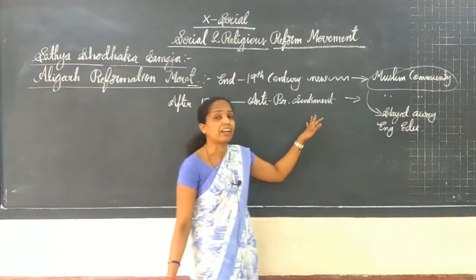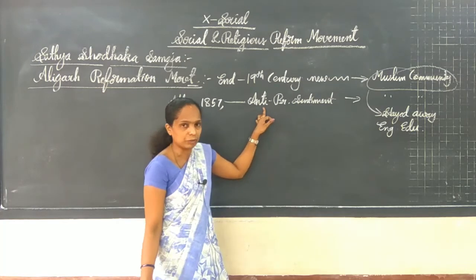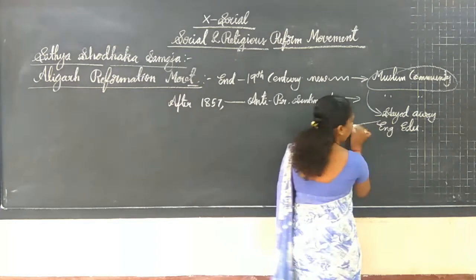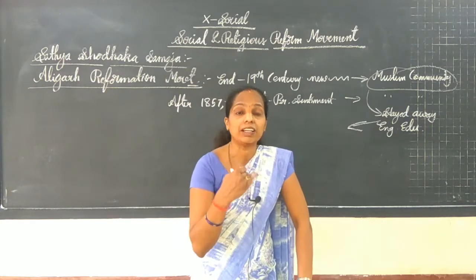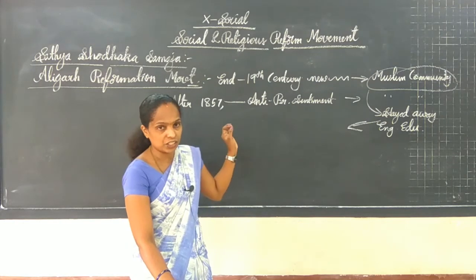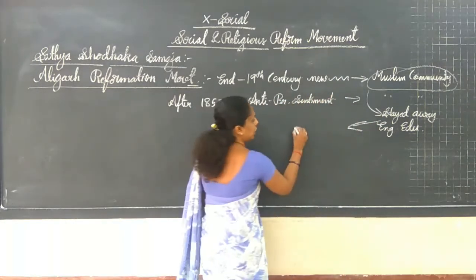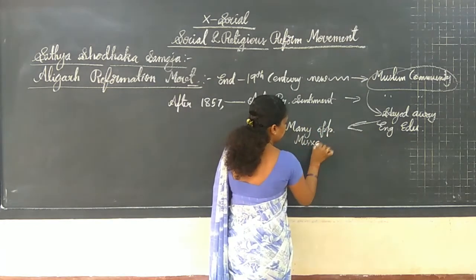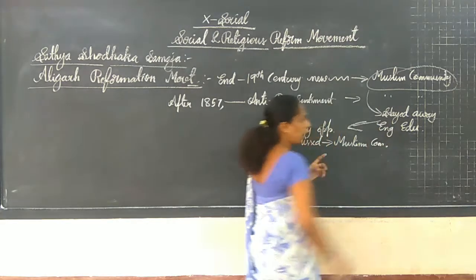Even after the new wave of social and religious reformation occurred, the anti-British sentiment was growing in the mind of the Muslim community. That means they stayed away from English education. What was the result here? When they stayed away from English education, most opportunities based on English education were missed by the Muslim community.